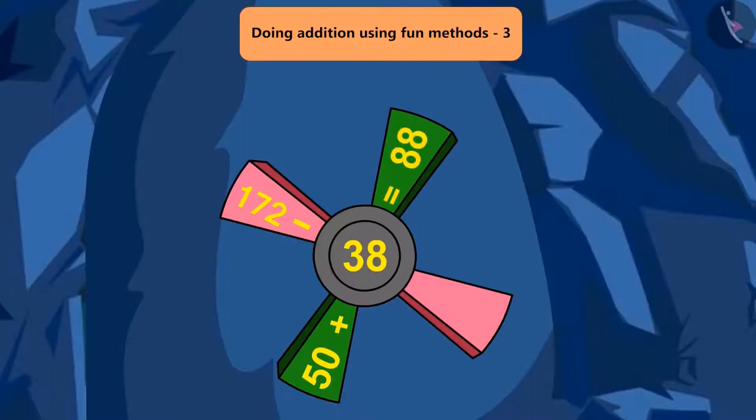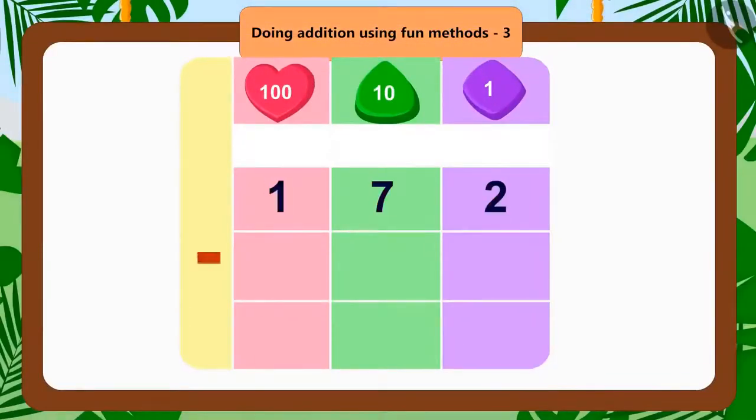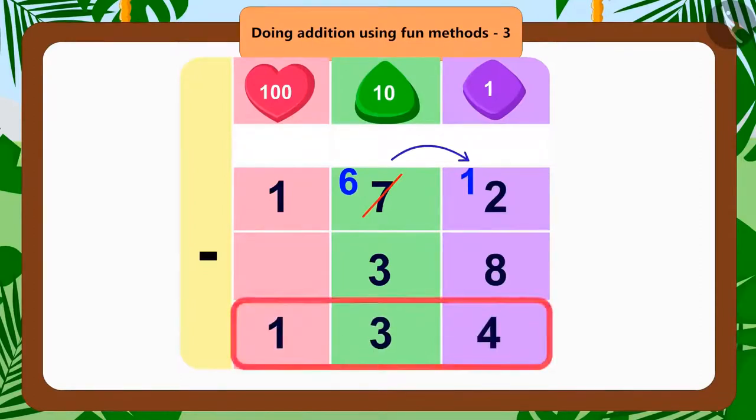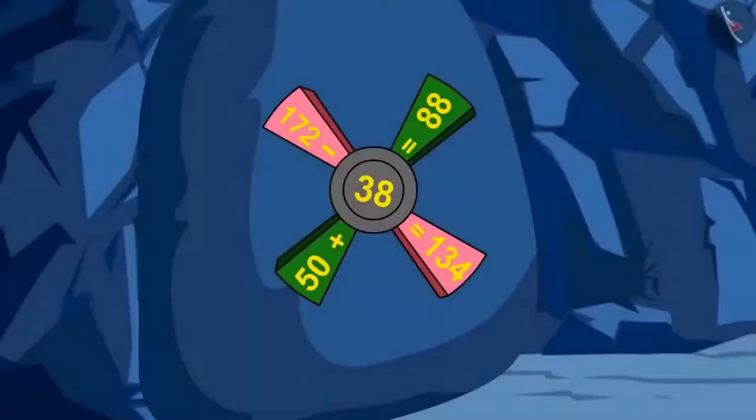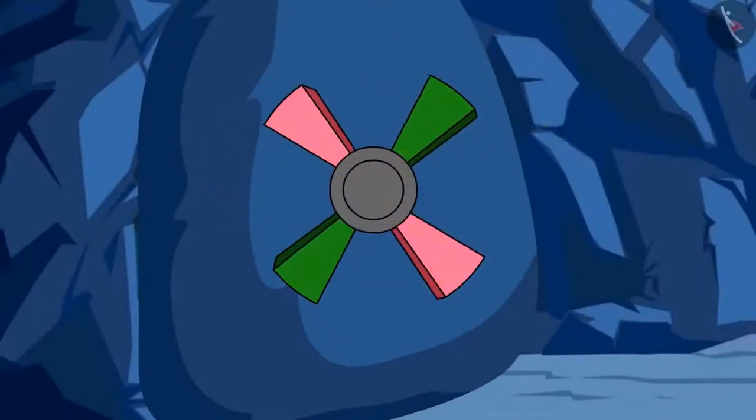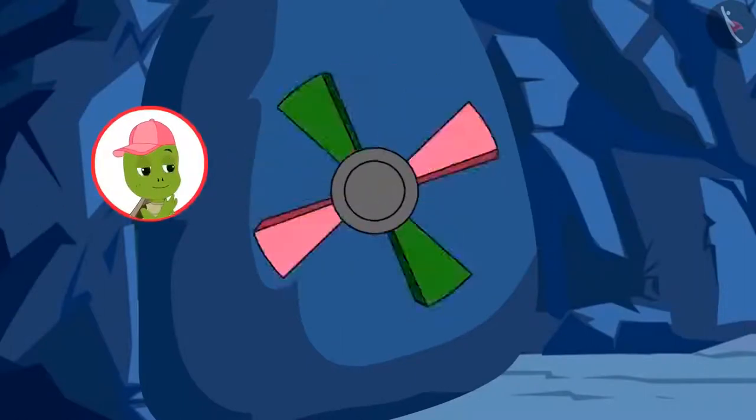Now, we will solve the subtraction question on the windmill. If we subtract 38 from 172, what will be left? Yes, we are left with 134. Let us fill it in the second blank on the windmill. Our puzzle is solved. Hey, the windmill started moving. Tufan too found the answer to the puzzle with us. The second door opens.